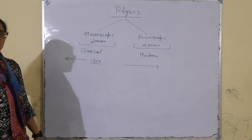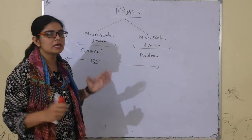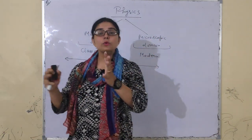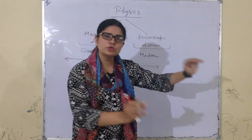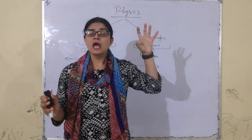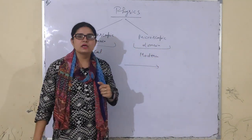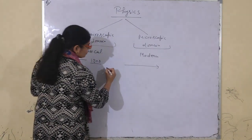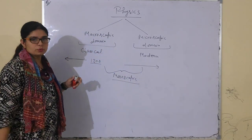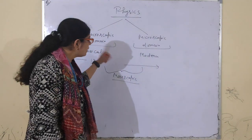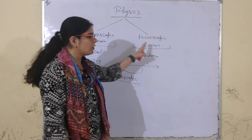So physics has two domains: one is macro and one is micro. When we talk about big things, it is classical physics; when we talk about small things, it is microscopic domain — modern physics. In between these two, there is also mesoscopic physics. Abhi hum iske baare mein direct nahi padhenge — we will talk about either macro or micro.